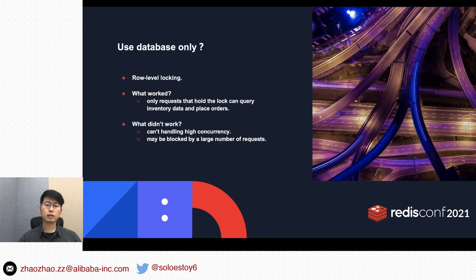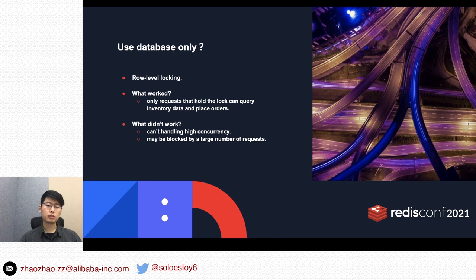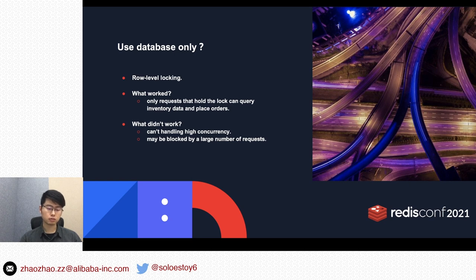How to handle the flash sales system? The first idea is maybe use the database. In most cases, the database uses row-level locking — it works because only the request holding the lock can query inventory data and place orders. But the database cannot handle high concurrency, because the lock and data always reside on disk, making I/O operations heavy and slow. Moreover, the database could be blocked by a large number of requests.